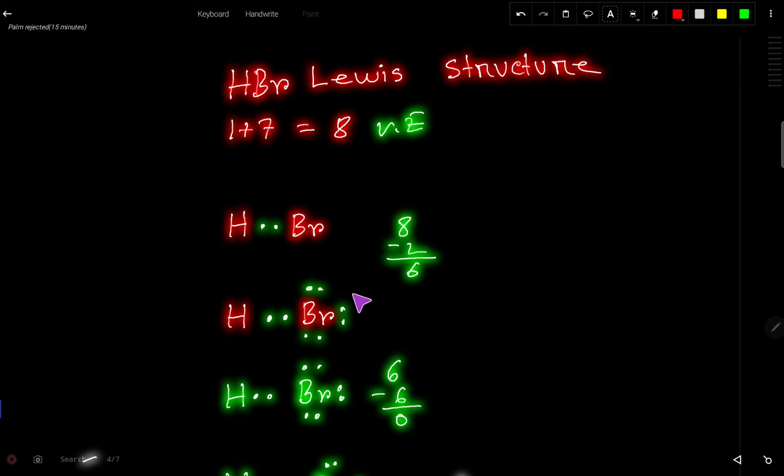Now look, this bromine has eight valence electrons and this hydrogen has two valence electrons. You can say that this is the Lewis structure of HBr.